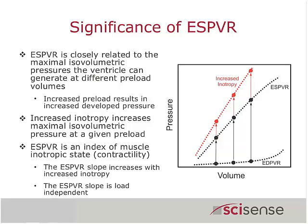Typically, with a Langendorff perfused heart, you would put a balloon in the left ventricle and change the balloon volume of the left ventricle. That balloon is connected to a pressure transducer, so when the ventricle contracts, you are generating a ventricular developed pressure. Let's do a little experiment: increase the balloon volume to a certain preload condition, and the heart contracts to generate a certain developed pressure.